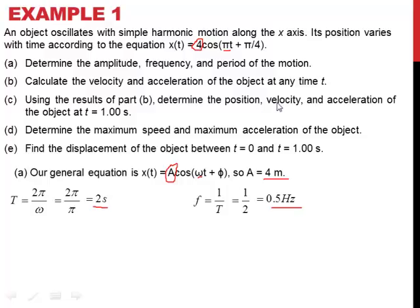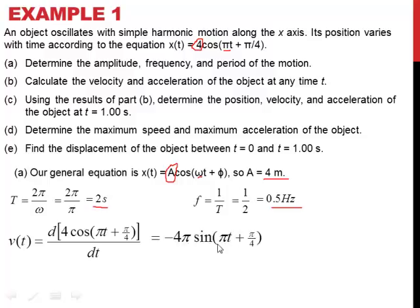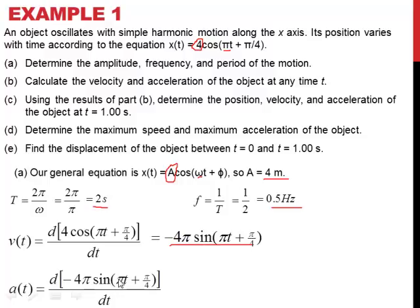Part b is to calculate the velocity and acceleration of the object at any time t. We take the first derivative of the position function to get the velocity. Using the chain rule — the derivative of the inside times the derivative of the outside — the derivative of the inside is just π, and the derivative of the outside gives negative 4 sine. So we get v(t) equals negative 4π sine(πt + π/4). Then to get the acceleration, we take the first derivative of velocity, applying the chain rule again, and we end up with a(t) equals negative 4π² cosine(πt + π/4).